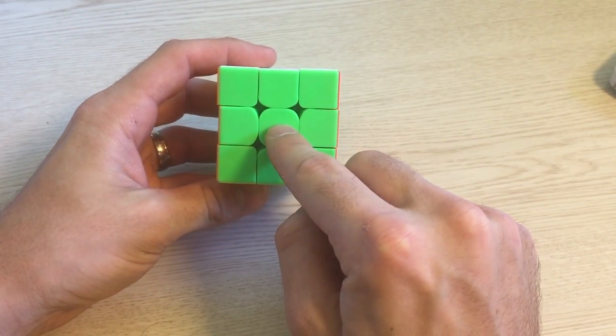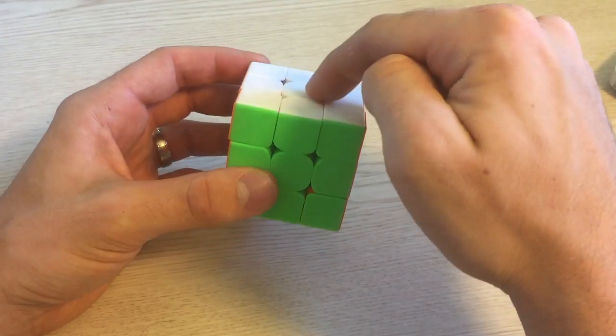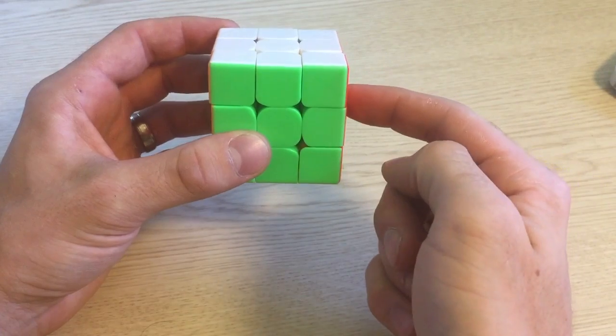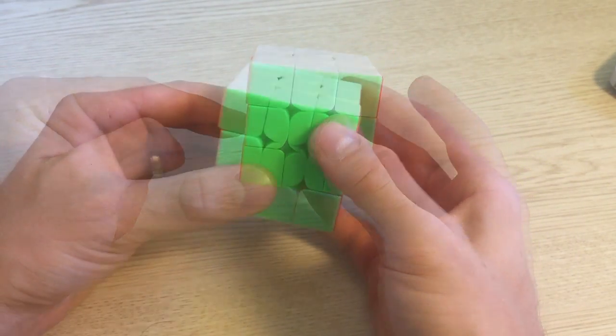There are six common letters that talk about which face to turn. F for front, B for back, U for up, D for down, R for right, and L for left. Each letter means turning that face 90 degrees.